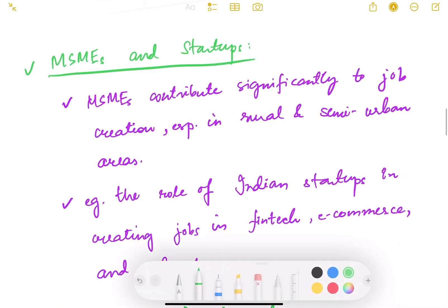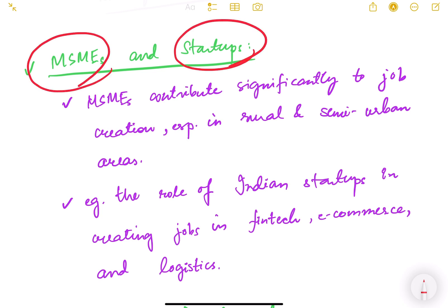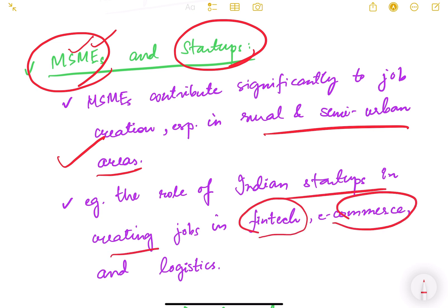The next driver of job creation is MSMEs and startups. More MSMEs and more startups will lead to more jobs naturally. MSMEs contribute significantly to job creation especially in rural and semi-urban areas. An example is the role of Indian startups in creating jobs in the fintech, e-commerce, and logistics sectors.